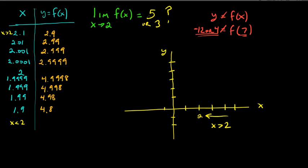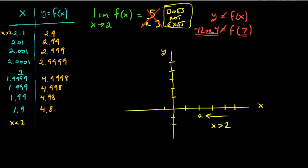The same is true for limits — you can't have more than one answer. So it's either 5 or 3, but not both. It depends on which side you're looking at: from the left it approaches 5, from the right it approaches 3. So we simply have to say this limit does not exist.